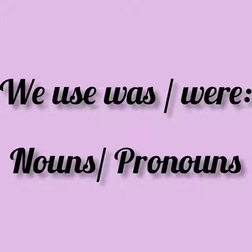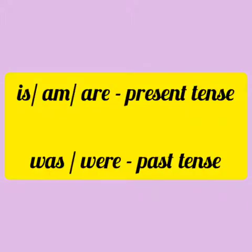Was and were का use हम past tense में करते हैं, noun और pronouns के साथ. और is, am, are का use हम present tense में करते हैं. Present tense means वर्तमानकाल. वर्तमानकाल की जब बात होती है, तब sentence में हम is, am, are का use करते हैं. और जब वही sentence past tense में होता है — जो बीत गया है, जो बीते हुए कल की बात करता है — वहाँ पर हम was and were का use करते हैं.